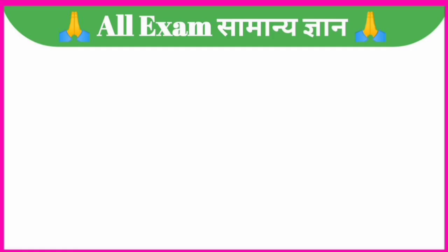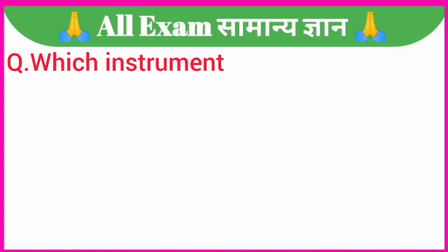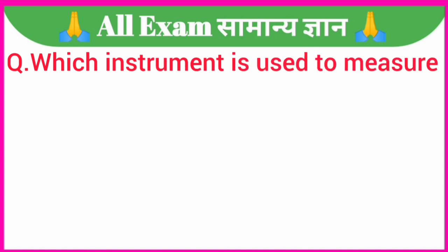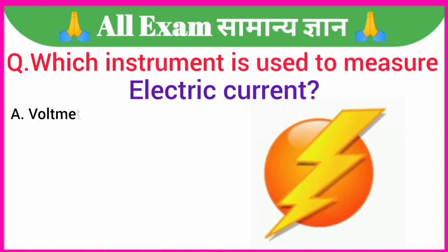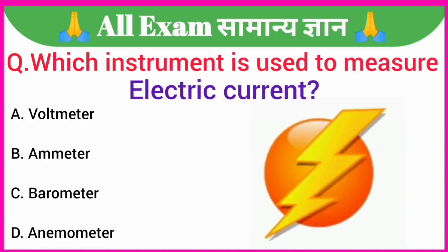Your first question is: which instrument is used to measure electric current? A. Voltmeter, B. Ammeter, C. Barometer, D. Anemometer. Your correct answer is option B. Ammeter.